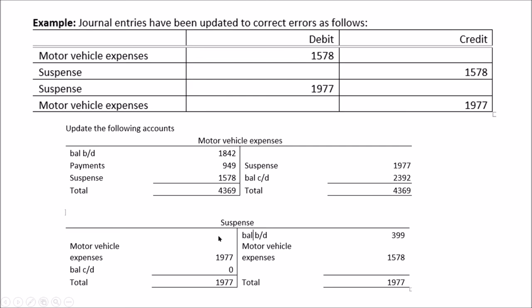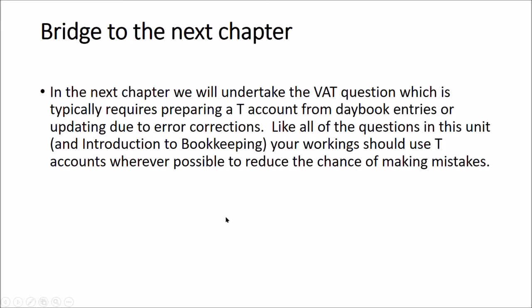That is the journal postings section. There are a lot of marks in the exam for this — 20 or more marks for suspense accounts alone, plus the irrecoverable debts question and the opening trial balance question, plus questions about which scenarios are posted to the journal. Together, you're looking at something like 30 to 35 marks in the exam from journal postings, suspense accounts, and related questions.